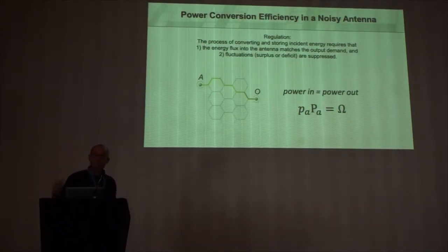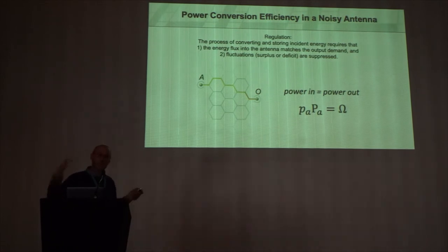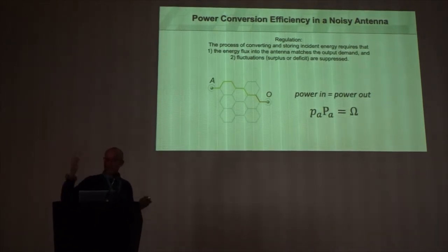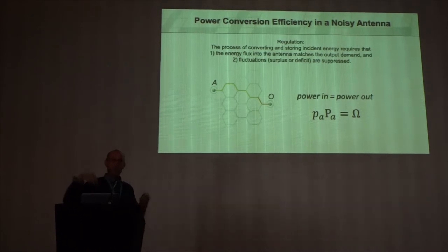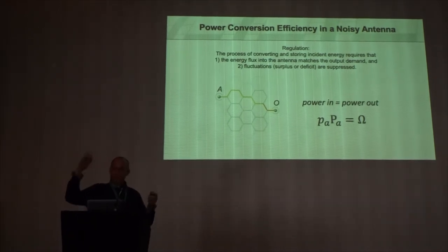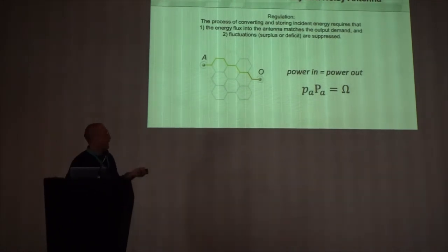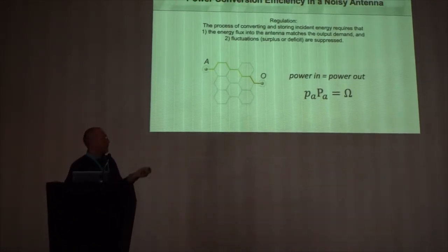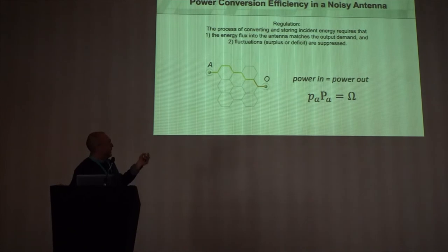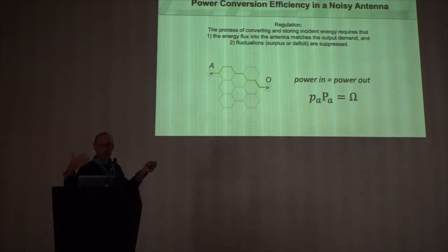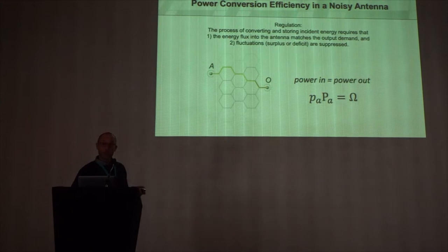Now think of if you powered your lights in your room by a solar cell. And it was directly coupled. And suddenly the sun was very bright. Your lights would be very bright. The sun goes a little dim. Your lights would be very dim. This is basically what I'm arguing is trying to be avoided here. What I want this system to do is take in all of the random noise coming from the solar spectrum and make it steady on the output.